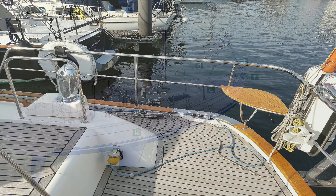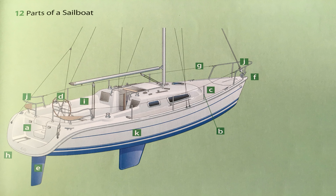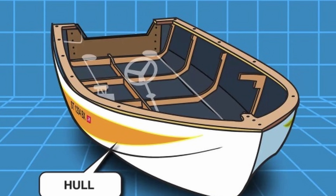Name the part of the sailboat labeled K. The hull. A hull is the watertight body of a sailing vessel.